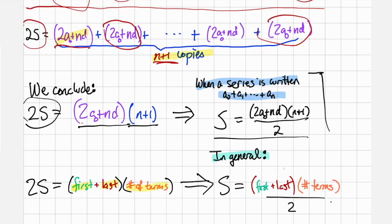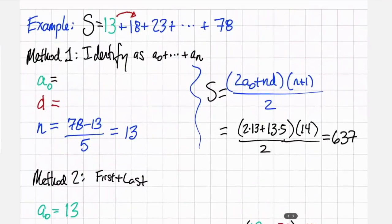A more heuristic way to talk about what this sum of the series is, is to take the sum of the first and the last term, multiply by the number of terms, and then divide by 2. So let's practice these two formulas for a particular example.